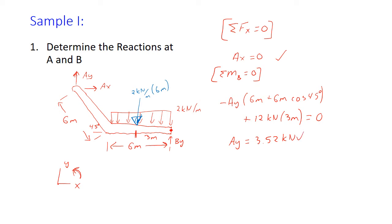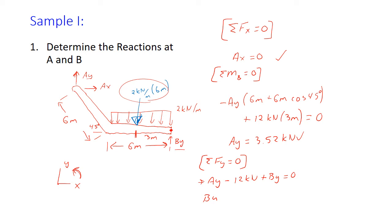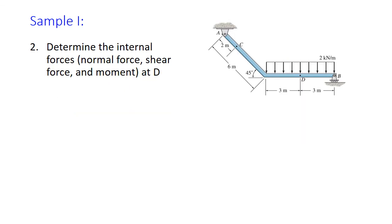Our final unknown is By, which we can determine by summing the forces in the Y direction equal to zero. We have Ay minus our 12 kilonewtons from our distributed load plus By equals zero. Since Ay is now known, we solve for By, and By is equal to 8.48 kilonewtons.